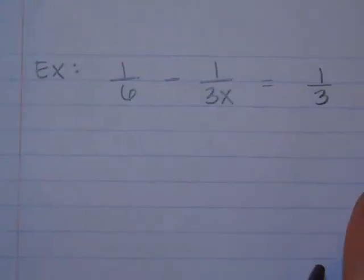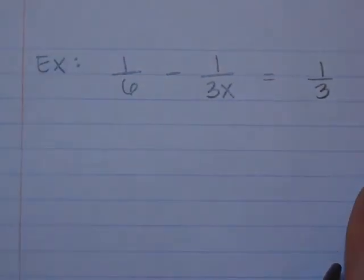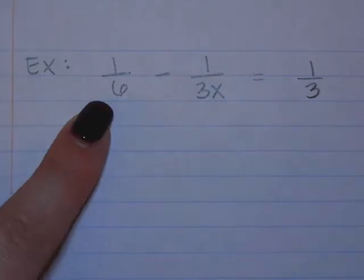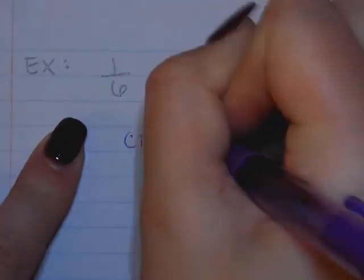All right, so here is the first class example we're going to do. What should we do first? Find the common denominator. We need all the denominators to be the same. So we need a 6. What else do we need? An X. So the common denominator here would be 6X.